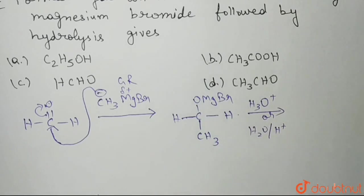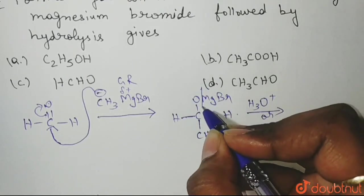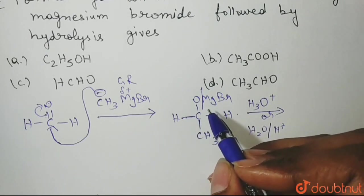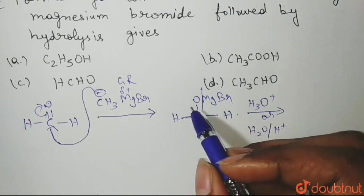Now, on hydrolysis, what will happen? This bond between O and Mg will be broken down. When hydrolysis occurs, we know that Mg is electropositive and oxygen is negative.